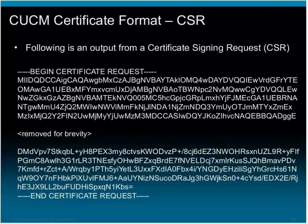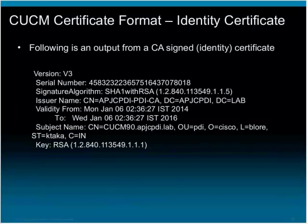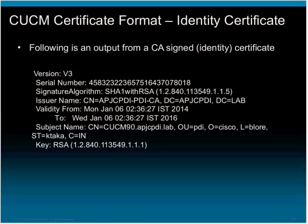Here comes the identity certificate — a certificate issued to a server by a CA. In this case, you can compare the issuer name, where the common name is apjcpdi-pdi-ca. However, the subject name is cucm90.apjctdi.lab, which tells you this is a certificate issued by PDI-CA to UCM90 — the host name of the call manager. This marked difference between the issuer and subject common names confirms this is not a CA certificate, but an identity certificate.